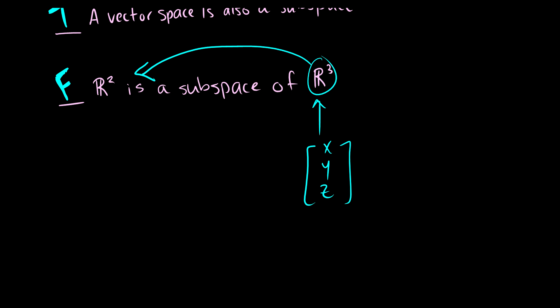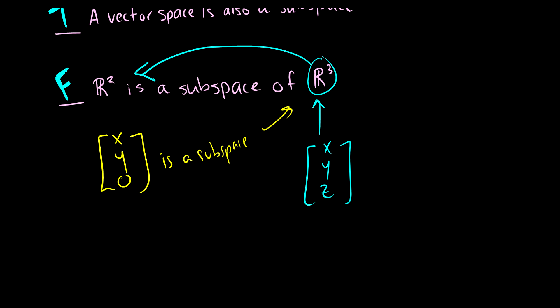How do we remedy this? You take all vectors of the form (x, y, 0), and then you can say this is a subspace of R3. But if you remove the zero and make it a two-entry vector, it's not a subspace. That was subspaces — if you have any questions, please leave them in the comments below.